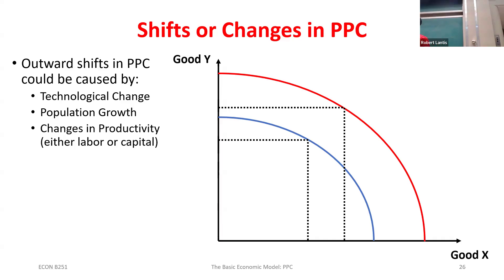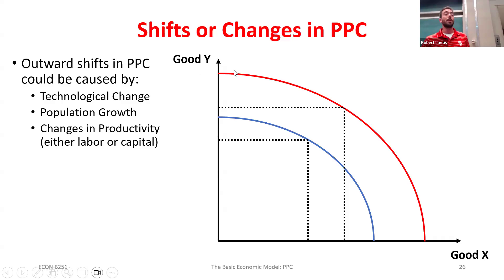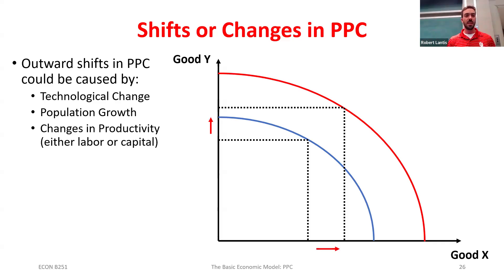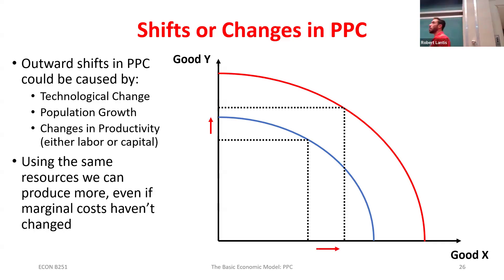We like that shift out because we can now get more of both goods — having more of both goods we're definitely better off. Other things that can cause this: population growth. One of our main resources is labor hours, so if we have more laborers we've got more labor hours. Assuming the same percent of the population is working, population growth shifts our production possibilities curve outward. More people means more labor hours.